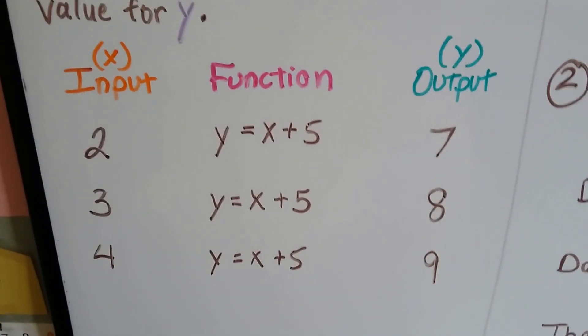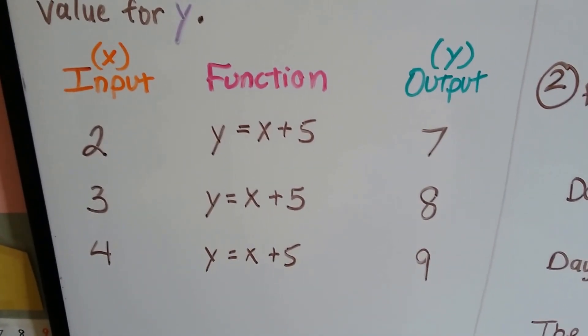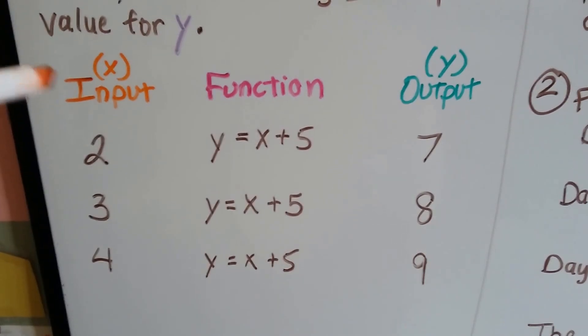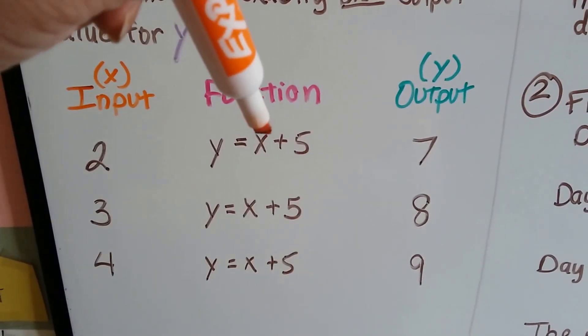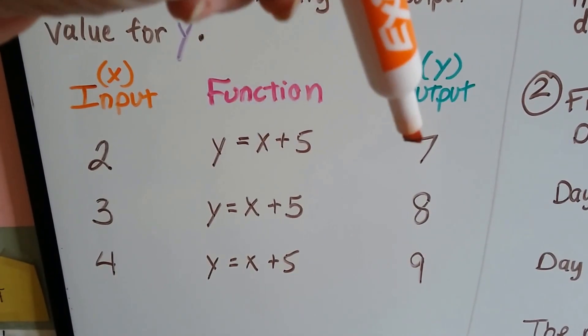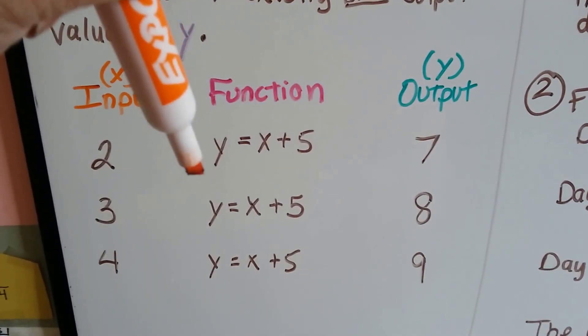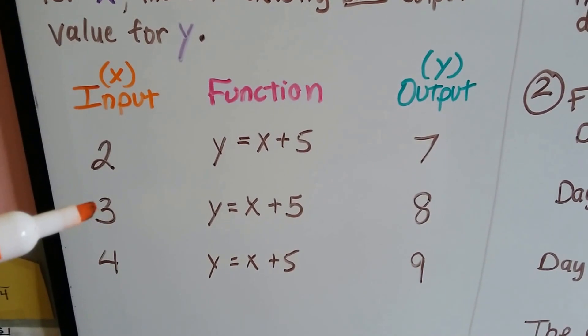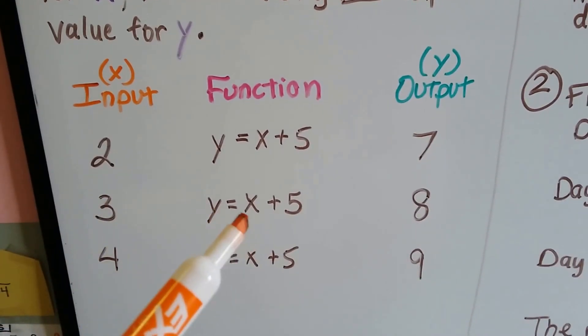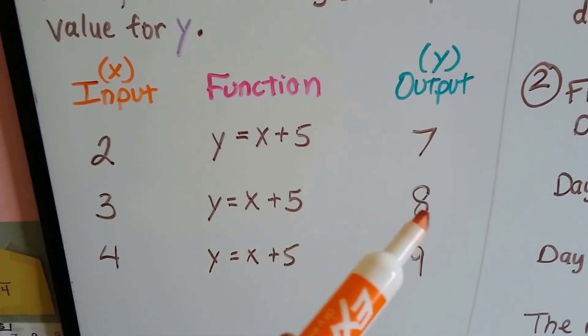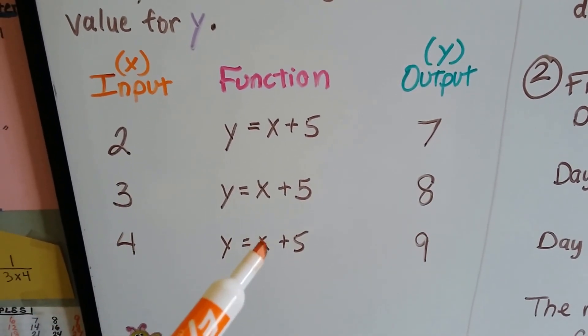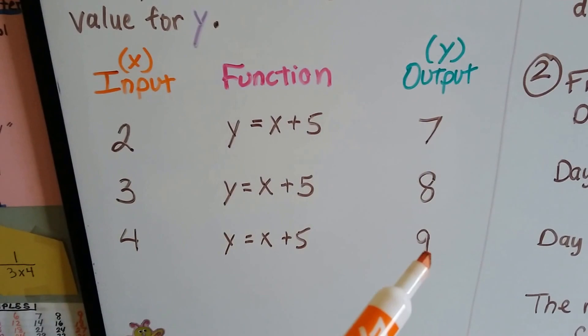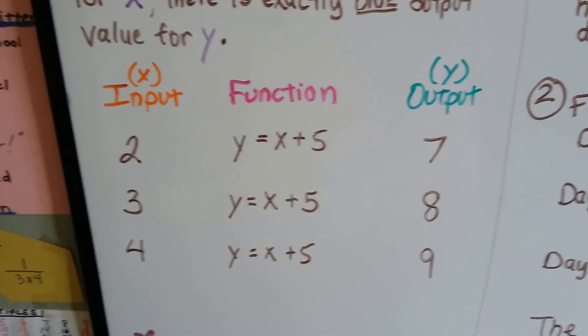Our function is going to be the equation y equals x plus 5. If our input, which is x, is a 2, and we put that here, our output is going to be a 7. Y will be 7. If our input is 3 in our function, our output will be 8. If our input is 4, our output will be 9. Now does that make sense?